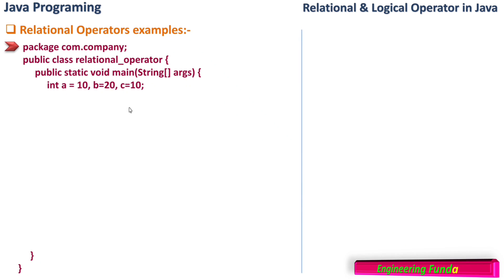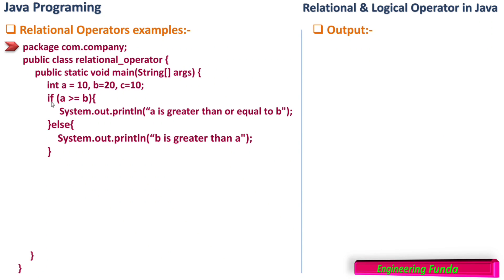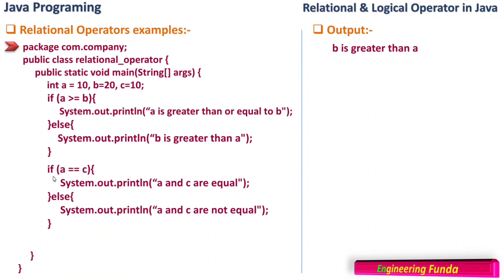We have three variables a, b, and c initialized to 10, 20, and 10 respectively. The first if condition checks a greater than or equal to b. The value of a is 10 and b is 20, so 10 >= 20 is false. It goes to the else part and prints 'b is greater than a'. Looking at the output, yes it prints 'b is greater than a'.